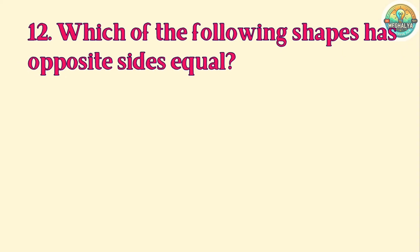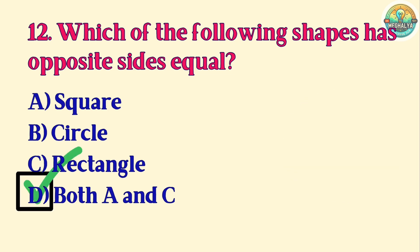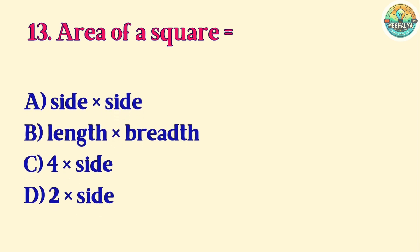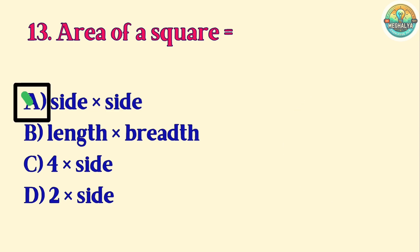Question 12. Which of the following shapes has opposite sides equal? A. Square. B. Circle. C. Rectangle. D. Both A and C. Correct answer is D. Both A and C. Question 13. Area of a square equals: A. Side times side. B. Length times breadth. C. Four times side. D. Two times side. Correct answer is A. Side times side.